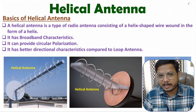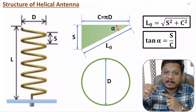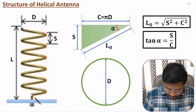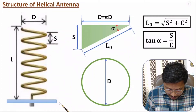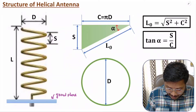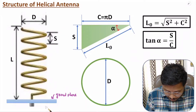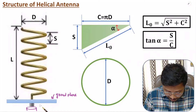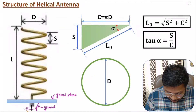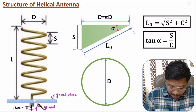Now I'll explain the structure of helical antenna. It is structured simply using a single wire wound in the shape of a helix. We have a ground plane here. When you give signal to this helical antenna using a coaxial cable, the inner conductor is connected with the center helical wire, and the outer conductor is connected with the ground plane.